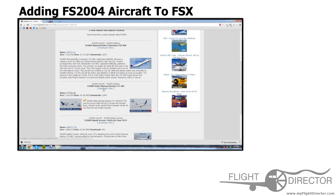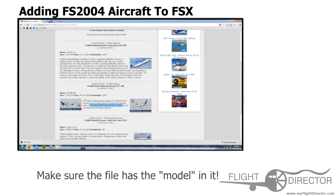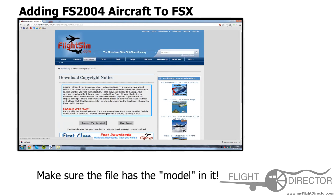Let's download the SkyTeam 757-200. It's painted on the great Project OpenSky model. It is a great model, and it's a Boeing 757-200 for FS2004. Let's download it. I've already downloaded this file, so I'll just skip that.